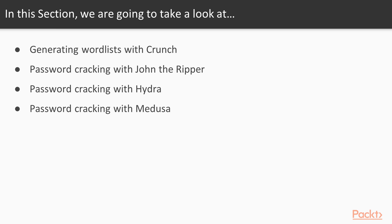We're going to be looking at how to generate a word list with crunch. Crunch is a fantastic tool that allows you to generate custom word lists. We'll then move on to password cracking with John the Ripper, which is a fantastic and extremely powerful password cracking tool.